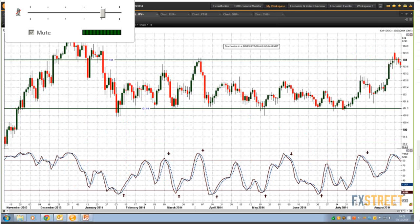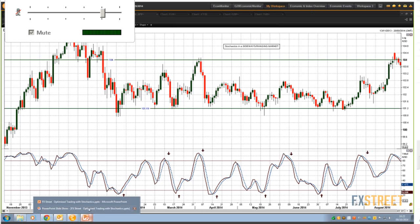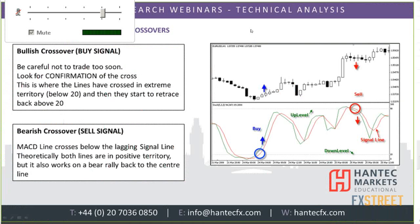I've had a question about crossovers, so that brings me nicely onto the next section. Crossovers generally tend to work best in sideways markets, as I showed on that Dollar/Yen chart. In a sideways market, your crossovers are looking for around the 20 mark. In a trending market you can still use crossovers, but they give you different signals. In a bull trend, if you get a bearish crossover, I would take that as a profit trigger — not a signal to go short — because you're not looking to short into an uptrend.